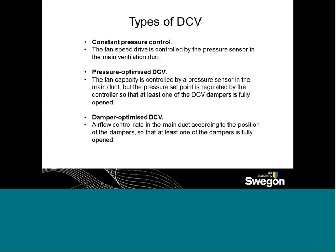There are at least three different types of DCV system, and you want to pick the one that fits the building you're considering. First is constant pressure control, where the fan is driven or controlled through a pressure sensor in the main ventilation duct at a suitable distance away. Then there is pressure-optimized demand control ventilation, where you have a pressure set point regulated by the controller so that at least one damper is fully open. The optimal today is damper-optimized DCV, where you're always making sure at least one damper is fully open. It's important to consider which type of DCV system best characterizes your application.